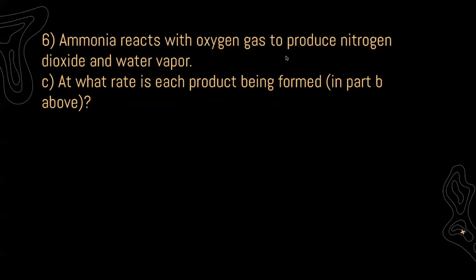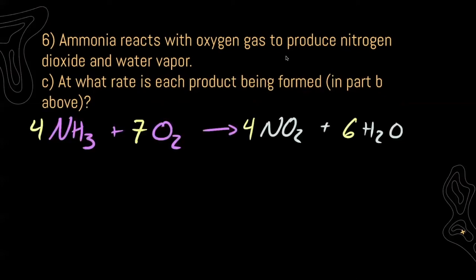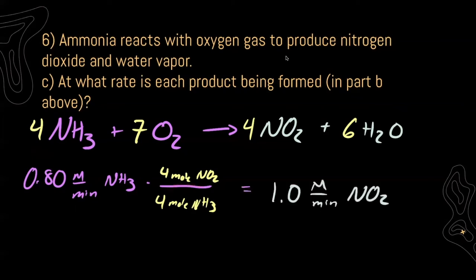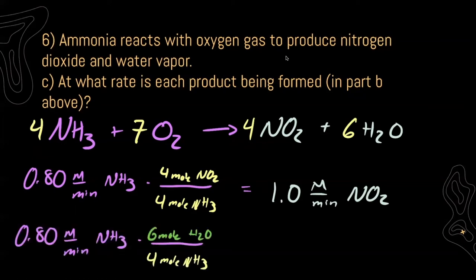Part C asks at what rate is each product being formed. We know the rate of our reaction in terms of ammonia, so let's convert that into each product using our balanced chemical equation. For nitrogen dioxide: the equation tells me that for every four moles of ammonia, I create four moles of nitrogen dioxide, giving a rate of 1.0 molar per minute. For water: for every six moles of water, I use four moles of ammonia, giving a rate of 1.2 molar per minute.